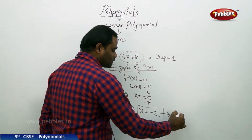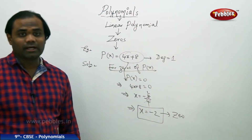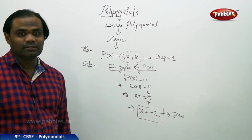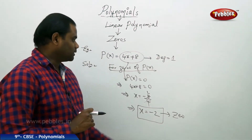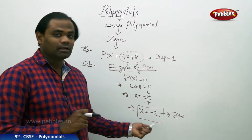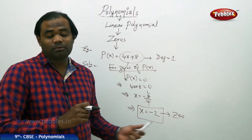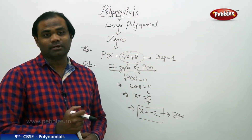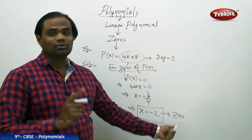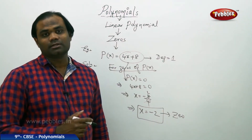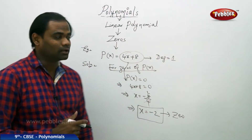So this is the zero — that is how we identify the zero of the linear polynomial. Interestingly, I also note a very important property here: for every linear polynomial, there is only one zero, which is how we conclude.